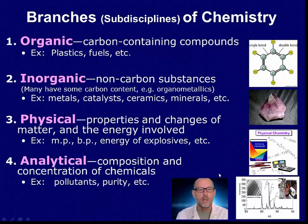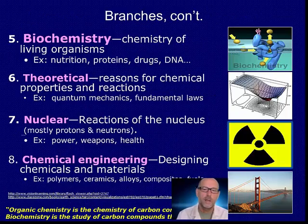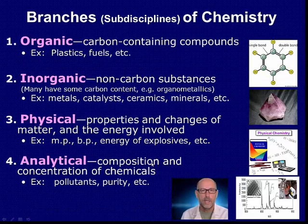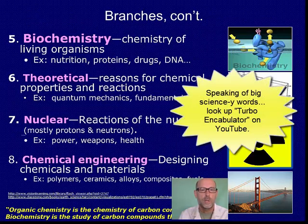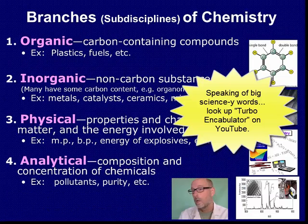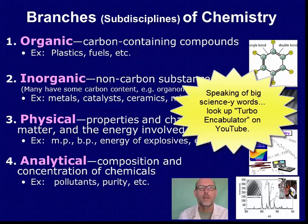According to our book, there are seven branches of chemistry, and I've added an eighth one. The branches include organic chemistry, inorganic chemistry, physical chemistry, analytical chemistry, biochemistry, theoretical chemistry, nuclear chemistry, and chemical engineering. Those are big mouthfuls, aren't they? But we'll take them slow and try to understand them.